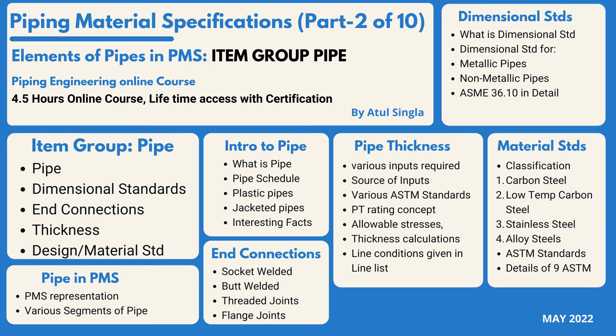Piping material specification is one of the most important deliverables from the piping discipline. This is Part 2 of this course. In Part 1, we discussed what PMS is, its various items in detail, the various elements covered in any pipe class, and the various inputs required — especially the fluid list — to set the foundation for this particular deliverable.